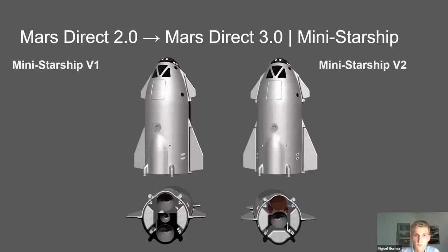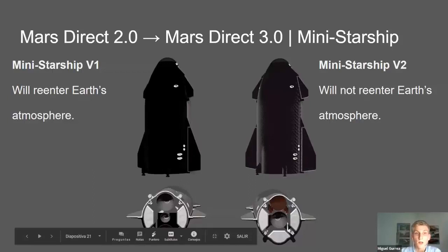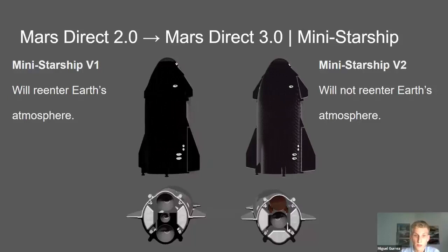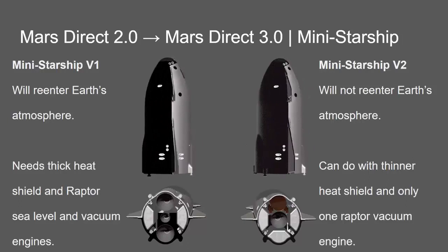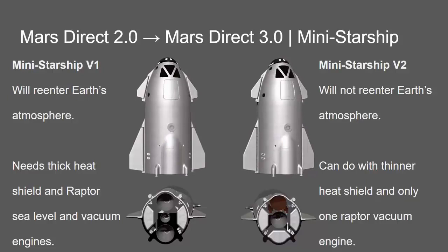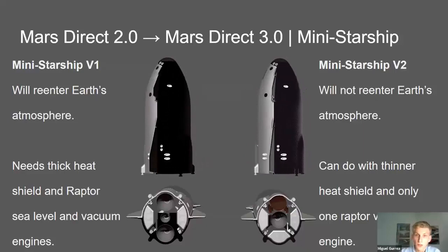The mini Starship in Mars Direct 3.0 has two key differences from Dr. Zubrin's original proposal. Dr. Zubrin's mini Starship would re-enter from interplanetary space, which is a very hot re-entry requiring a very thick heat shield, and it would need an atmospheric Raptor engine to land on Earth. The mini Starship version 2 used in Mars Direct 3.0 would not re-enter the Earth's atmosphere — it can use a thinner heat shield designed only to re-enter Mars, and would only need one vacuum Raptor engine, which is sufficient for landing in Mars's thin atmosphere.